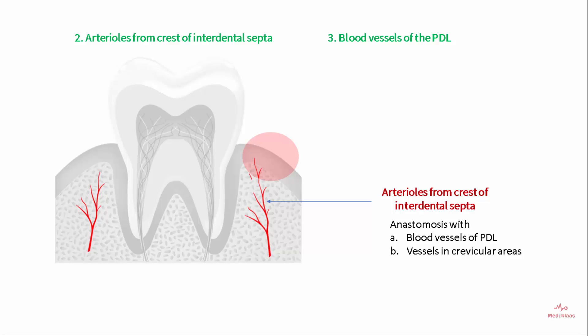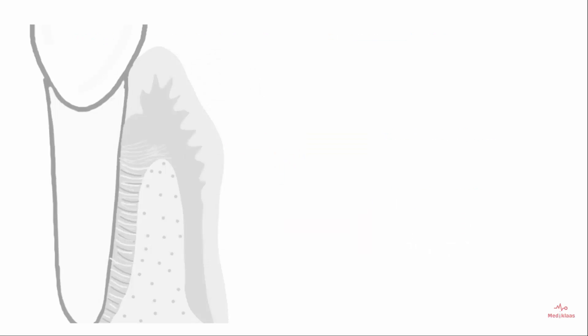Blood vessels of the periodontal ligament extend into the gingiva and anastomose with capillaries of the sulcus area. Capillaries extend into the papillary connective tissue in the form of terminal hairpin loops.